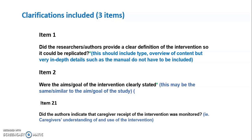For item 2 — were the goals or aim of the intervention clearly stated? — as not all authors set a clear statement on the aim or goal of an intervention, the review team felt that the aim of the intervention could be very similar or reintegrated into the aim of the study. The text 'this may be similar or the same to the aim or goal of the study' was inserted to allow all reviewers to take this into consideration. For item 21 — did the authors indicate that caregiver receipt of the intervention was monitored? — this was clarified as caregiver's understanding of and use of the intervention.